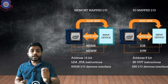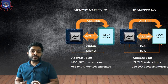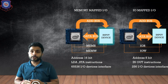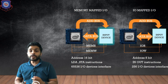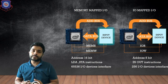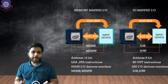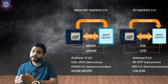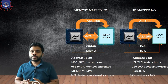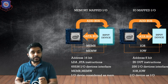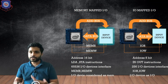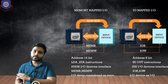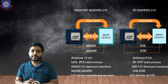In Memory Mapped I/O, you can interface 65,536 input/output devices, because 2 raised to 16 gives that many possibilities. In I/O Mapped I/O, you can connect 2 raised to 8, which is 256 input/output devices. For Memory Mapped I/O, the memory read and memory write control signals are needed, whereas for I/O Mapped I/O, the I/O read and I/O write control signals are needed. In Memory Mapped I/O, the I/O device is considered as memory, and in I/O Mapped I/O, the I/O device is treated as an I/O device.